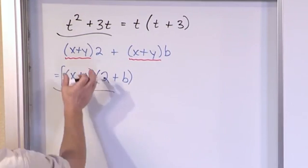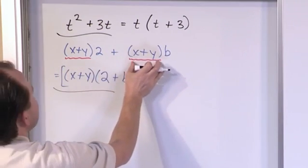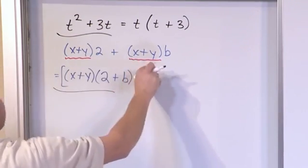This is called factoring by grouping. It's because you kind of look at a group of terms and you try to find out if any groups are common and you pull it out.